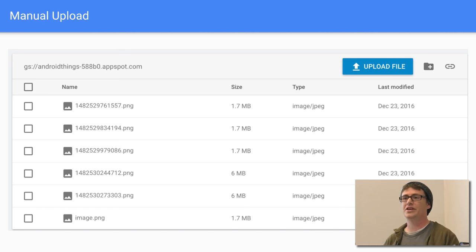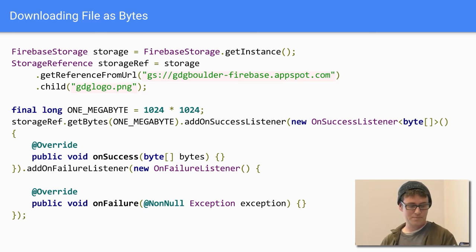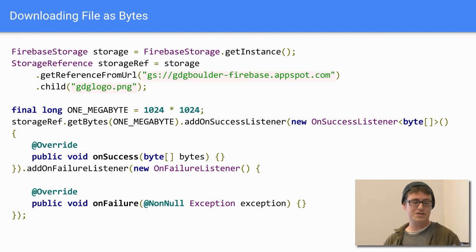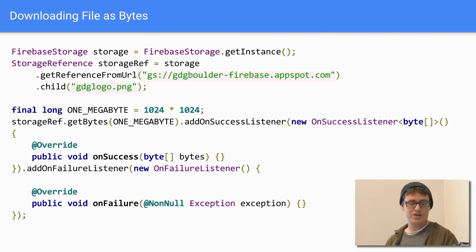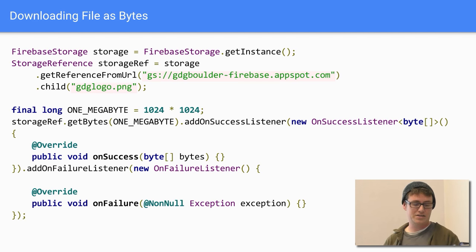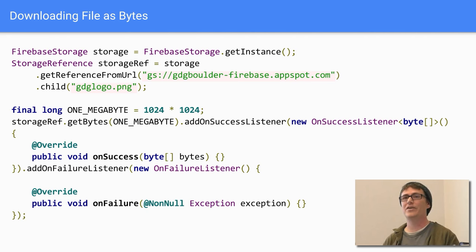Here's an actual example from Android Things — I uploaded stuff from one of those devices, but you can also upload manually. To download as bytes, create a storage reference from the file storage URL (the gs:// link at the top of manual upload), add the child for the file object, then use getBytes to bring it down. You'll have success and failure listeners so you know what's happening asynchronously.